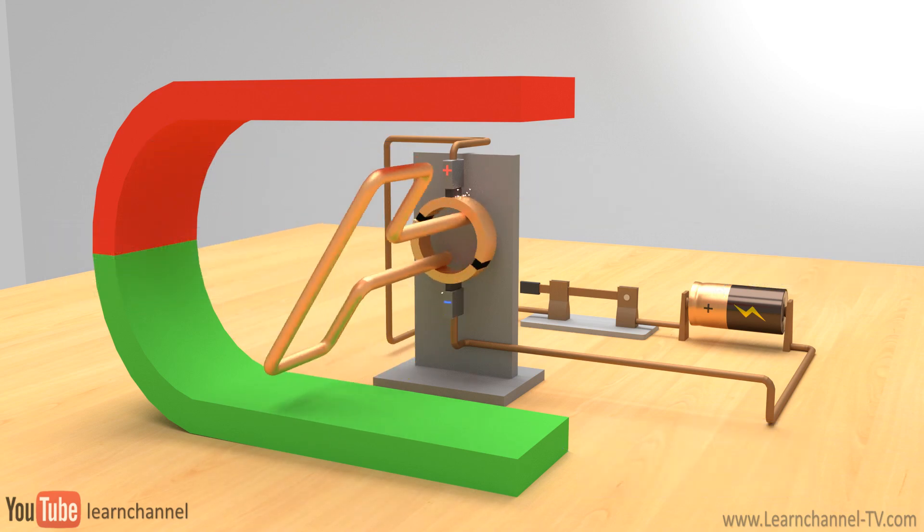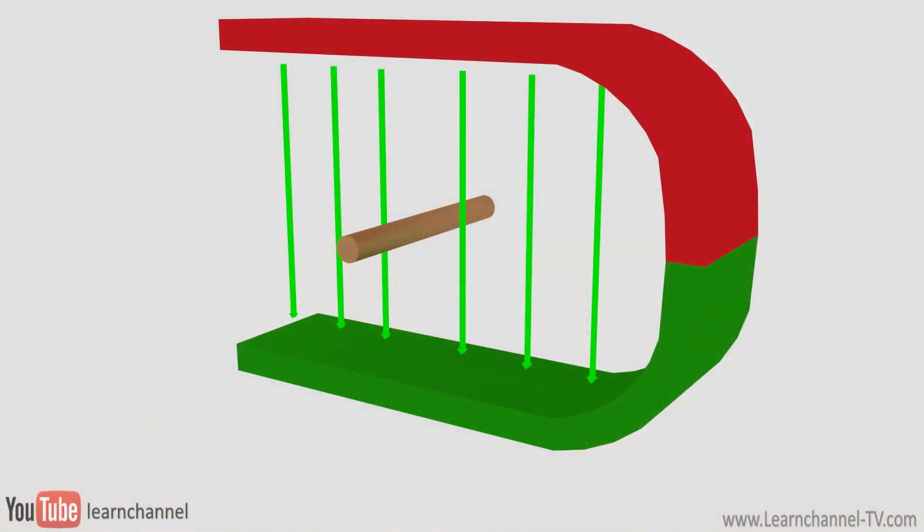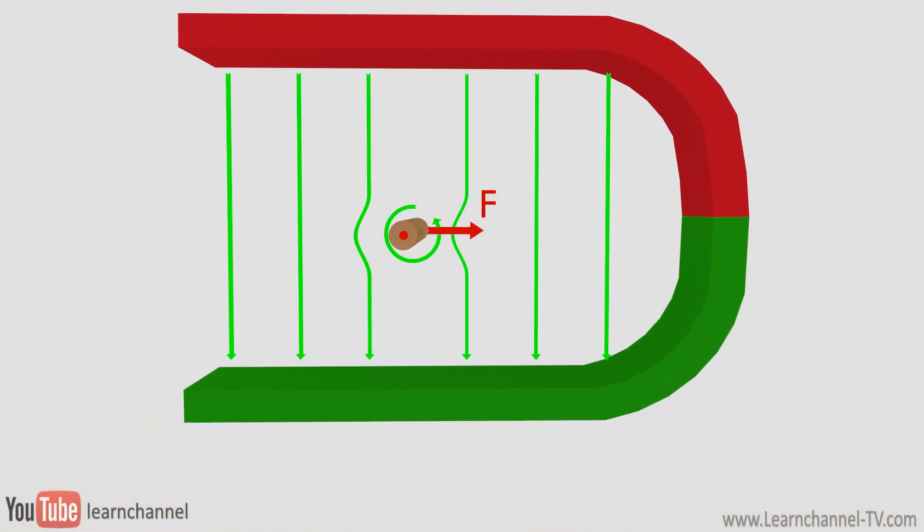To understand how this coil can rotate, we should have a closer look at a current carrying wire within a magnetic field.